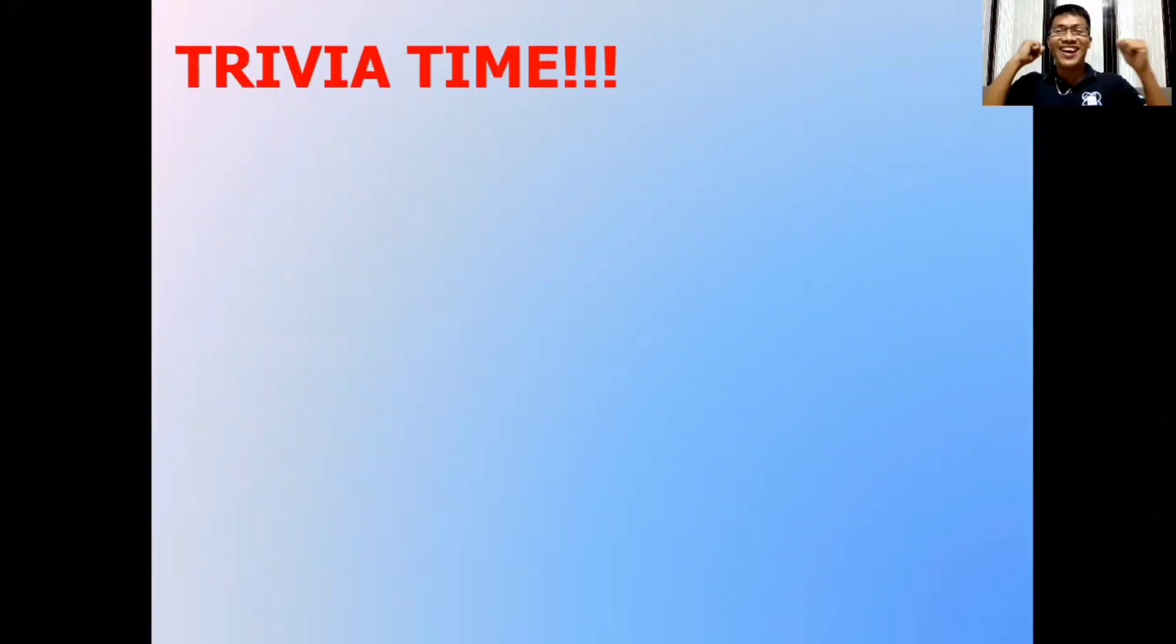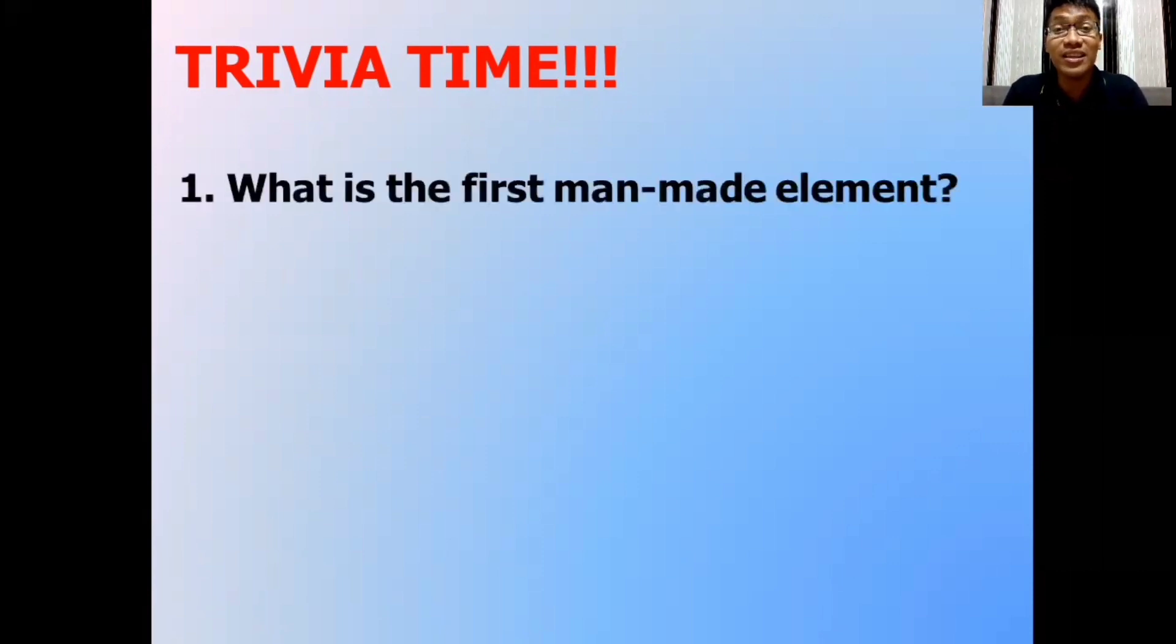And it's trivia time! Let us try to answer the following questions about the elements. Question number one. What is the first man-made element? The correct answer? Technetium with a chemical symbol of Tc.